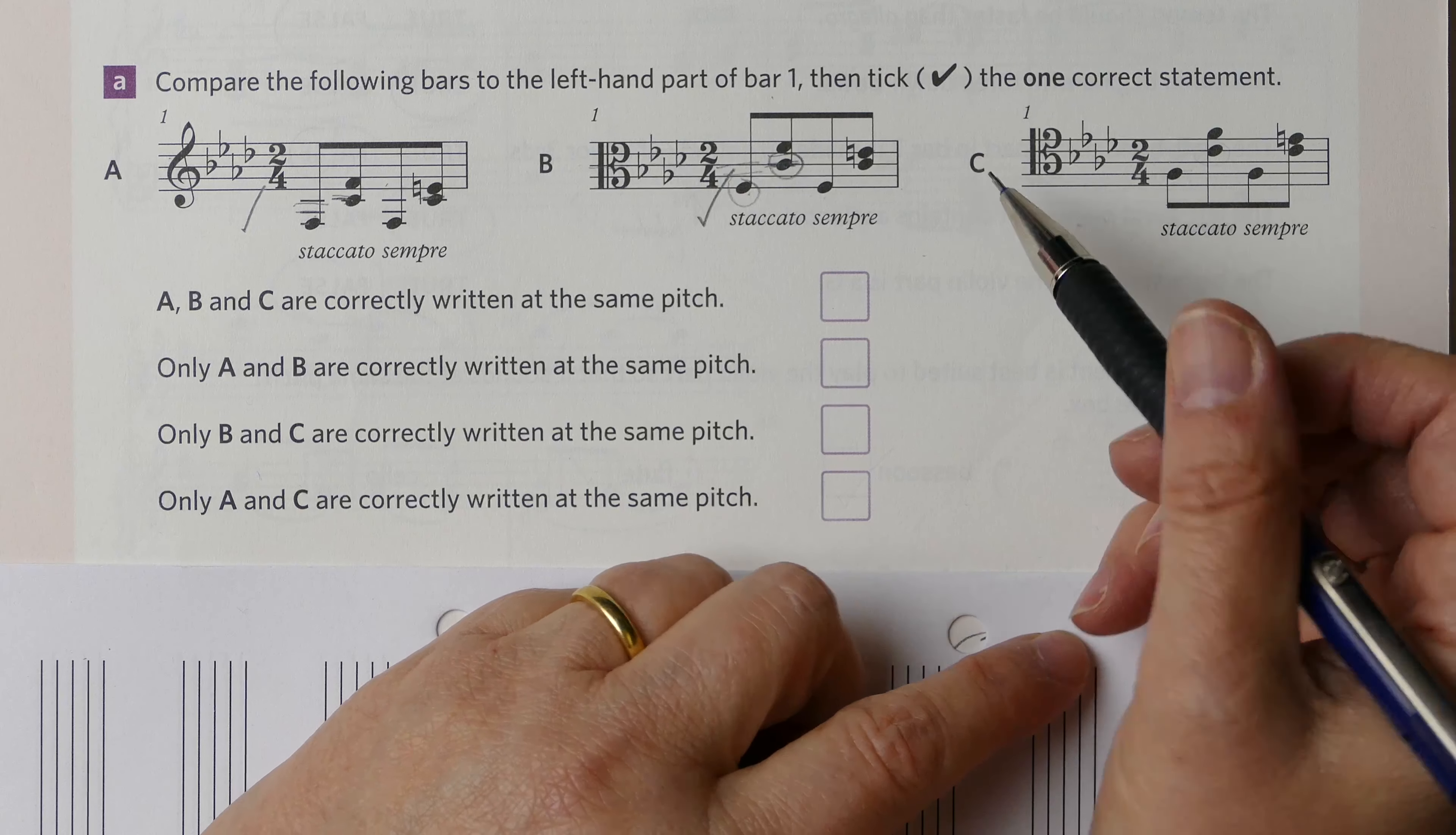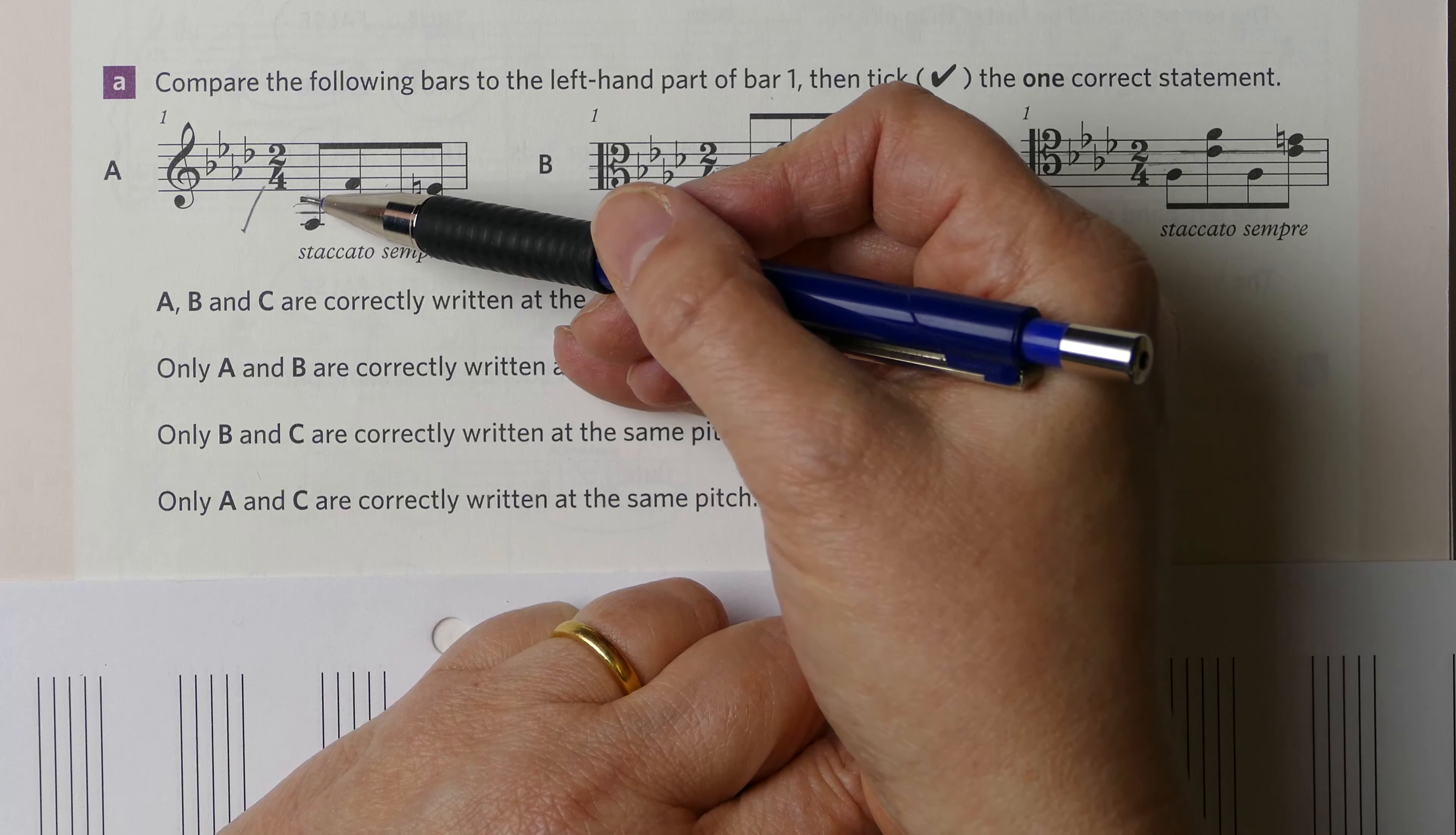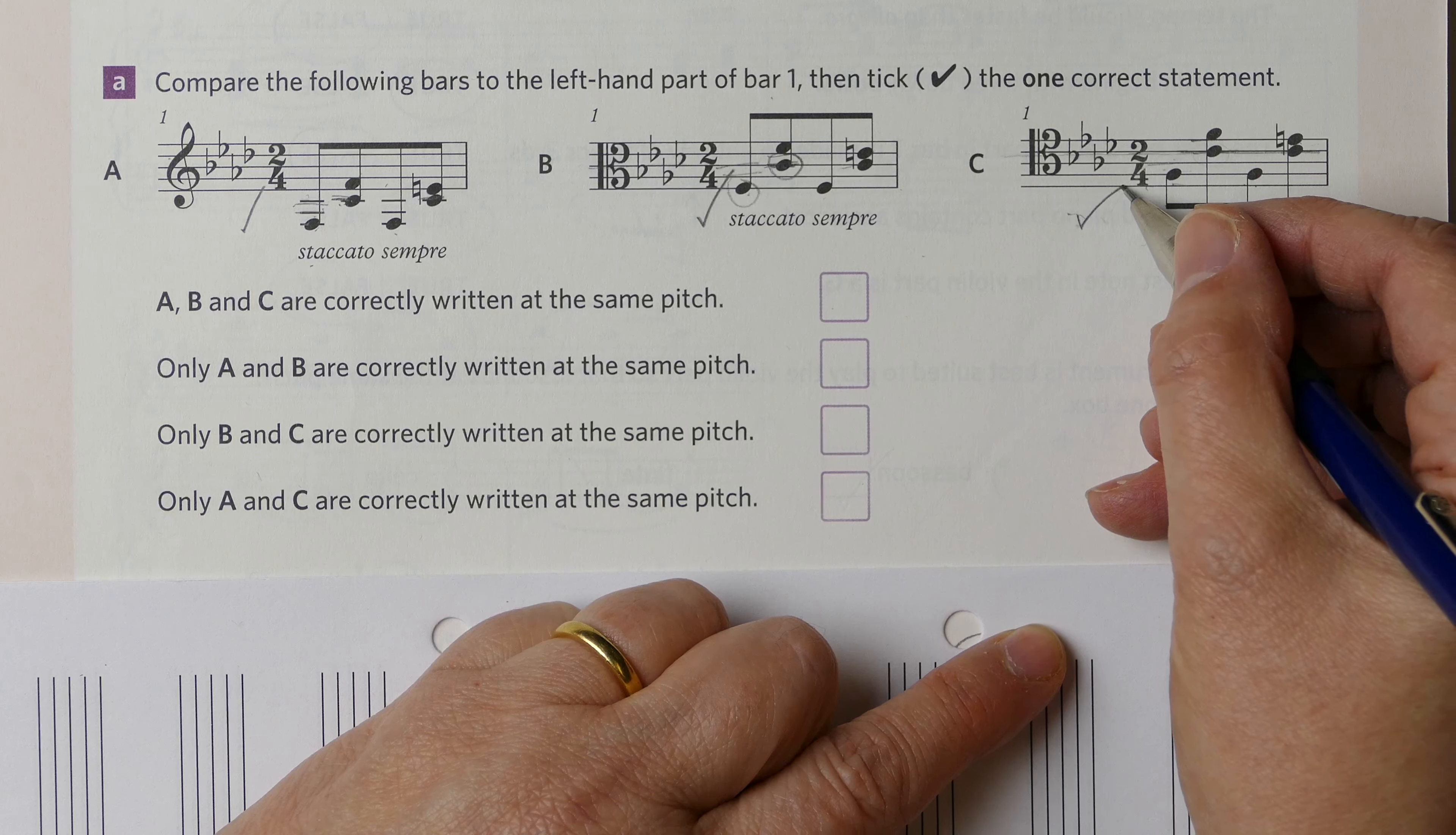Let's now check this final one in the tenor clef. That's middle C, so there we have middle C. That's correct. And then here we have C, B, A, G, F, which is the F that we need. And then here we have the C, D, E, F above that. That's the same.